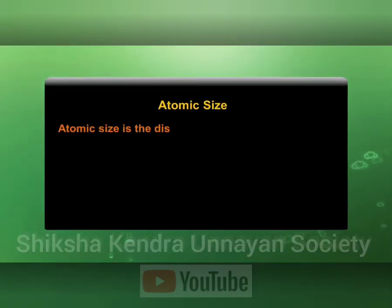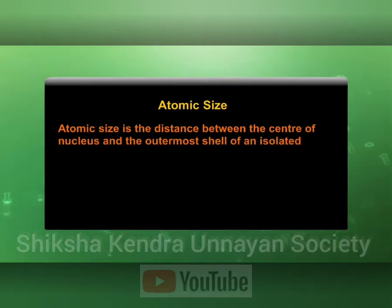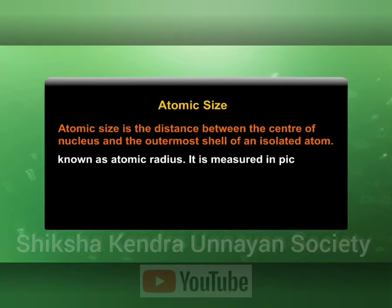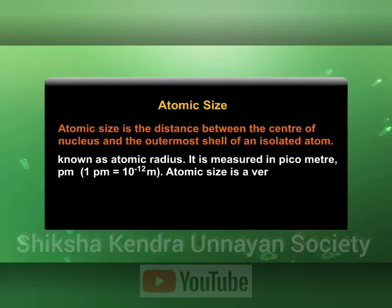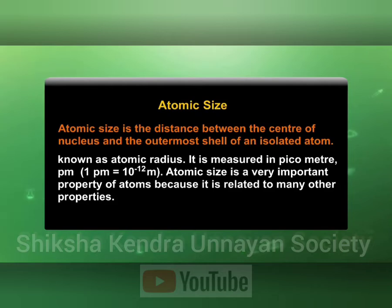Atomic size is the distance between the center of the nucleus and the outermost shell of an isolated atom. It is also known as atomic radius and is measured in picometers. Atomic size is a very important property of an atom because it relates to many other properties.